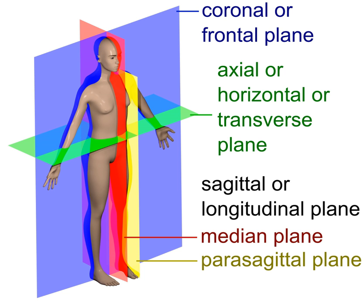The sagittal plane or median plane is a plane parallel to the sagittal suture. It divides the body into left and right. The coronal plane or frontal plane divides the body into dorsal and ventral, back and front, or posterior and anterior portions.